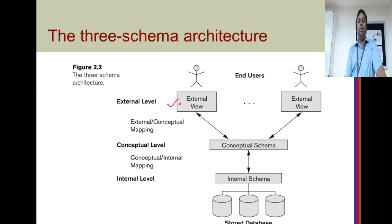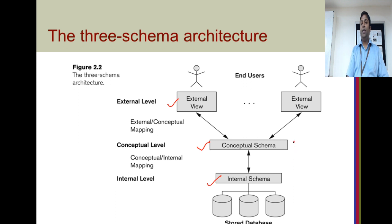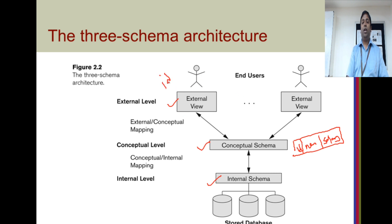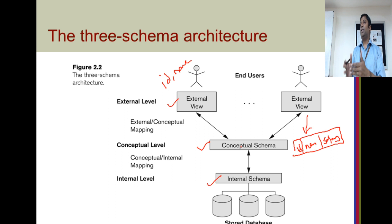There are three levels. One is the external view. The intermediate level is the conceptual level. The third level is the internal schema. If you are talking about a faculty table, you go and create the schema for the faculty — say you have faculty ID, faculty name, and salary. One of the views generated is that a student can view only the ID and name of the faculty.